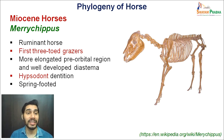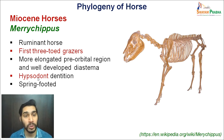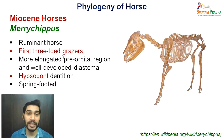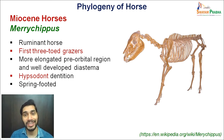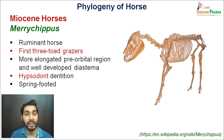One important thing about Merychippus: it is the first three-toed grazer. They are no longer browsers but grazers, because there has been a change from brachydont to hypsodont dentition. As the crown size increased, they changed their mode of feeding from browsing to grazing. They still have three toes, which is why they are called the first three-toed grazers. They also have more elongated pre-orbital regions, and a well-developed diastema is visible, unlike earlier forms.